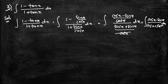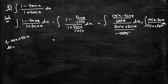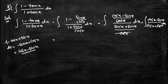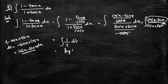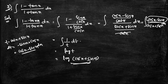Let t = cosx + sinx, then dt = (−sinx + cosx)dx = (cosx − sinx)dx, which matches the numerator. So the integral becomes ∫(1/t)dt = log t = log(cosx + sinx) + c. This is the answer to the second question.